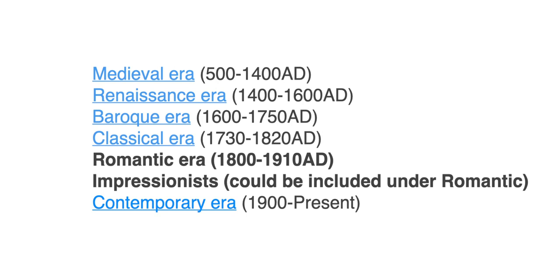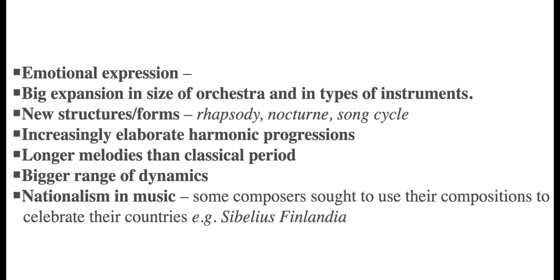Here are some of the characteristics of music of the Romantic era. The music became more emotional, and the formal structural considerations from classical music — the composers began to rebel against these restraints. The orchestra got bigger, more players were added, new instruments were added, new types of music, new structures like rhapsodies and nocturnes and song cycles were added. The melodies got longer, and the harmonic progressions — the chord progressions — got more elaborate.